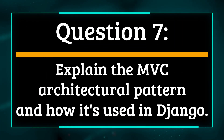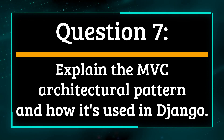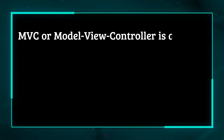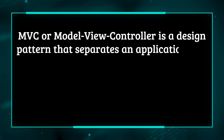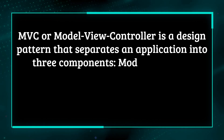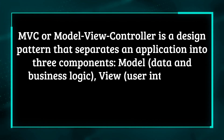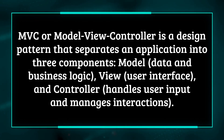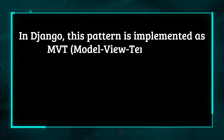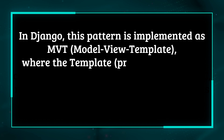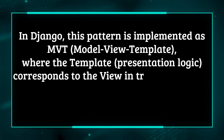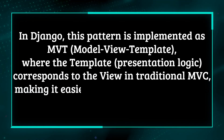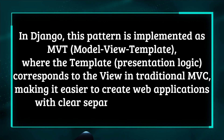Question 7: Explain the MVC architectural pattern and how it's used in Django. MVC, or model-view-controller, is a design pattern that separates an application into three components: model (data and business logic), view (user interface), and controller (handles user input and manages interactions). In Django, this pattern is implemented as MVT — model-view-template — where the template (presentation logic) corresponds to the view in traditional MVC, making it easier to create web applications with clear separation of concerns.